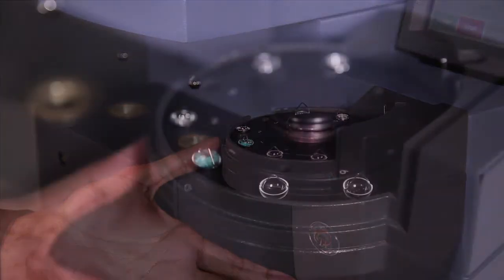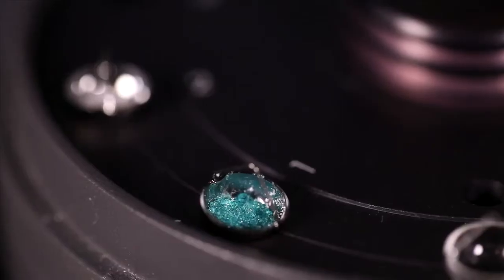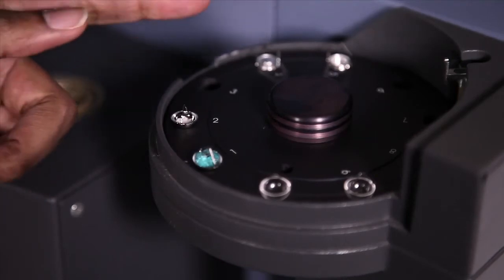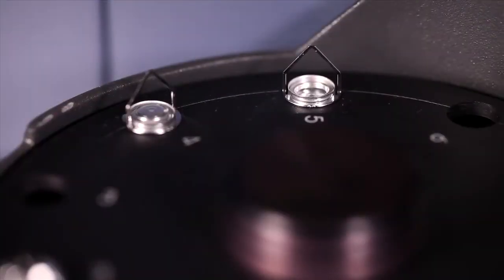The auto sampler can accommodate up to 10 sample pans. Typically, samples are placed in metalized quartz pans. However, you have an option to encapsulate your sample in hermetically sealed aluminum pans, which are punched open just prior to the start of the experiment.